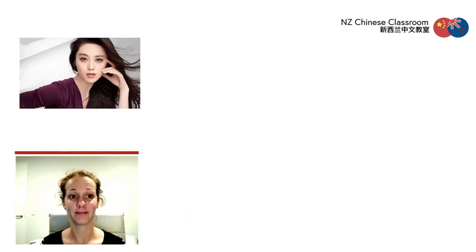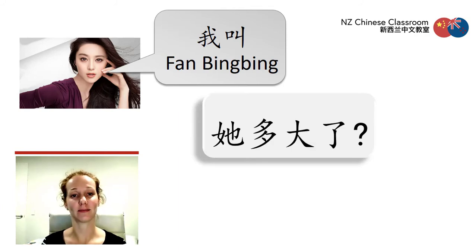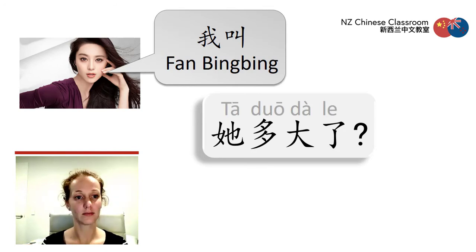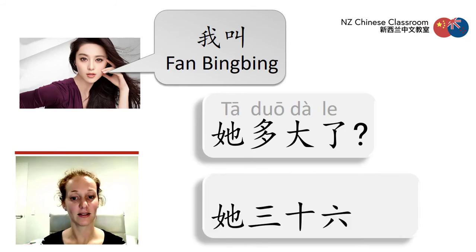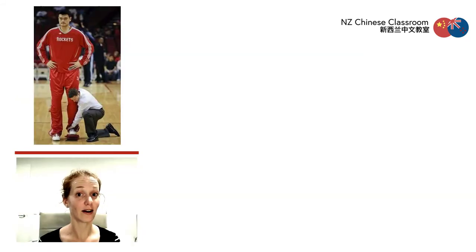这是谁? 我叫范冰冰。 他多大了? Notice that we have the 'she' — 他 — in the sentence. 你知道吗? 他36岁了.